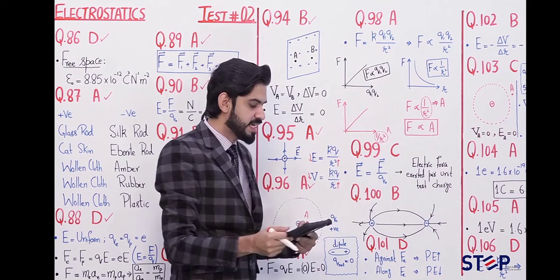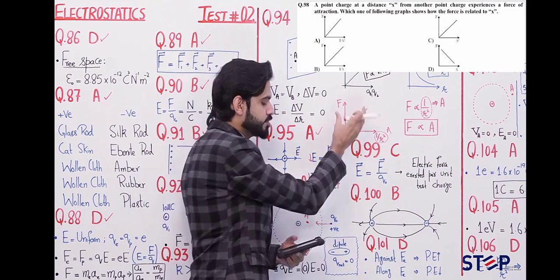Because in this question of the options, we have the A option. This graph is the same. So the answer is A.